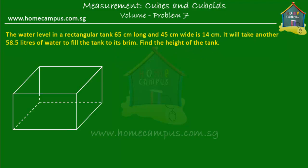There is a rectangular tank that looks something like this. The water level in this tank is 14 cm, which doesn't mean that the height of the tank is 14 cm — it means that there is water filling this tank and the level of water is 14 cm. The length of the tank is 65 cm, the width or breadth is 45 cm, and the level of water is 14 cm. If the base is 0 cm, then the water level is at 14 cm.